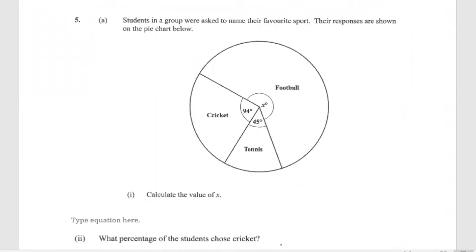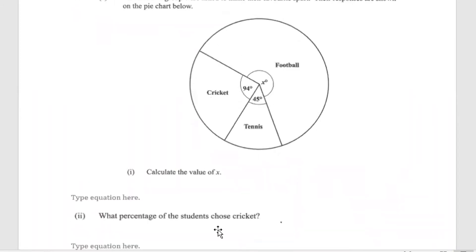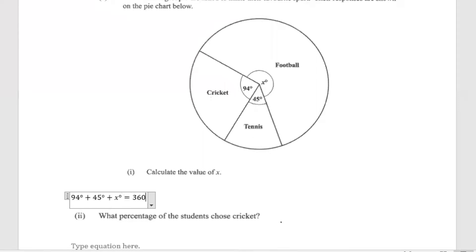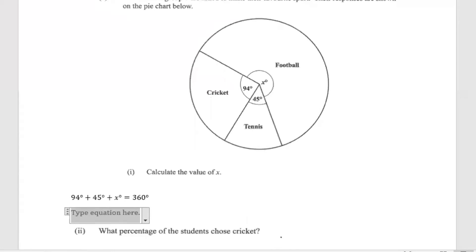What we know is that for a circle, the total degrees in any circle adds up to 360 degrees. So therefore, what we're going to do is say 94 degrees plus 45 degrees plus X degrees is equal to 360 degrees. When we add 94 and 45, what we'll get is 139 degrees plus X degrees is equal to 360.